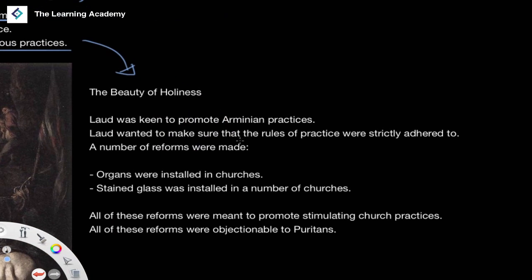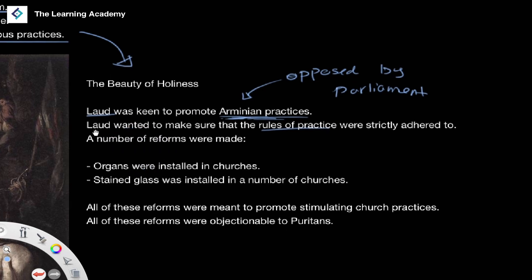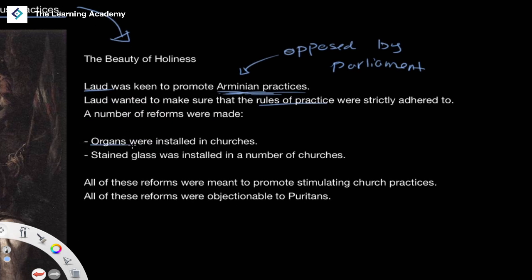We'll begin by talking about the Beauty of Holiness. This was a policy resulting from Laud's keen ambition to promote Armenian practices, which was opposed by Parliament. Laud wanted to make sure that the rules and practices of religious observance were strictly adhered to. A number of reforms were made, including things such as the installation of organs in churches and the installation of stained glass windows. These reforms were meant to make the practice of going to church more stimulating.